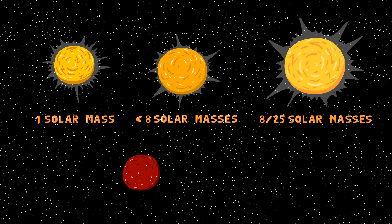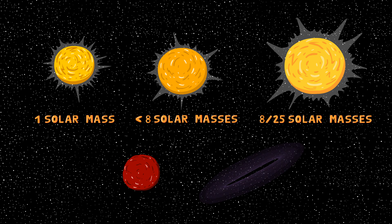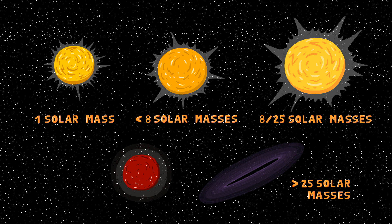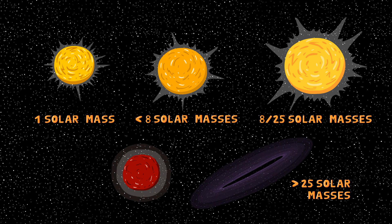These supernova are fairly common. One happens in our galaxy every few hundred years or so. For stars with more than 25 solar masses, they can still die in a supernova death, but what remains will be a black hole. Type 1 supernova are quite different.